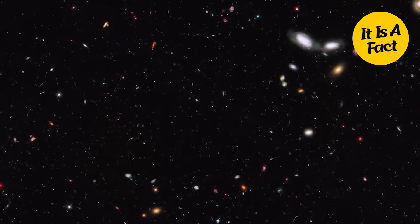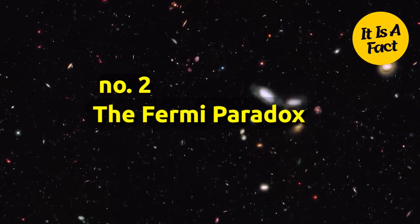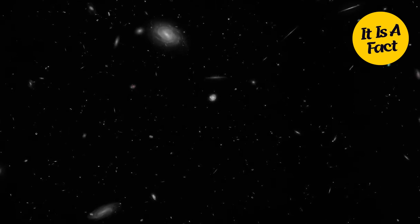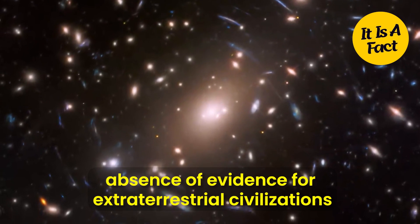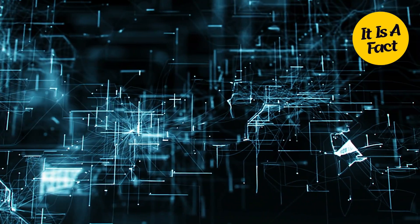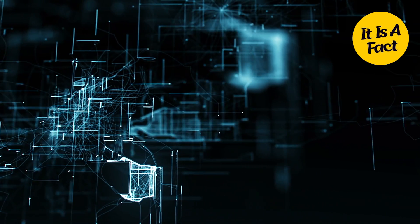Confront the enigma of the cosmos in theory number 2, the Fermi Paradox. With countless galaxies and the potential for alien life, where are they? This paradox questions the absence of evidence for extraterrestrial civilizations, challenging our assumptions about the existence and longevity of intelligent life. Do we stand alone, or is there a greater cosmic truth waiting to be unveiled?